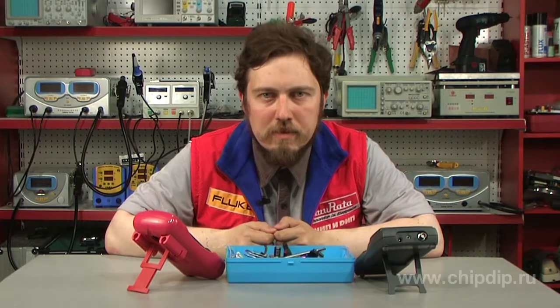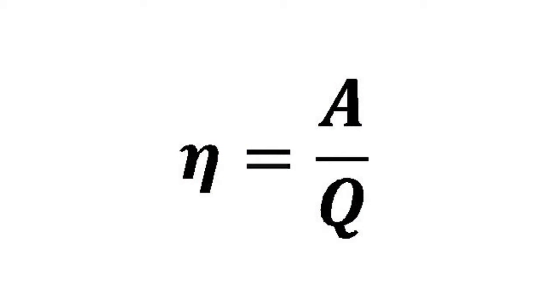Efficiency coefficient is the ratio of a useful effect to the expended energy. It is a non-dimensional value and is often measured in percent. Mathematically, the definition of efficiency can be put into the formula, where A is a useful effect and Q is the expended heat.